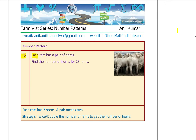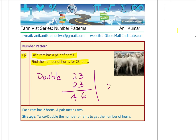The question is: each Ram has a pair of horns — they have two horns. Find the number of horns for 23 Rams. If we have 23 Rams, how many horns will there be? Simple — you learned the strategy: double it, using the explicit rule. So double of 23 means you can add 23 to itself — 3 plus 3 is 6, 2 plus 2 is 4 — or you could do 23 times 2, which is also doubling. Either case, you get 46. So the number of horns for 23 Rams will be 46.